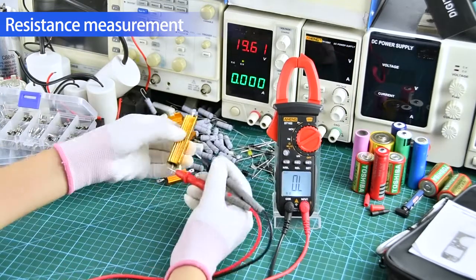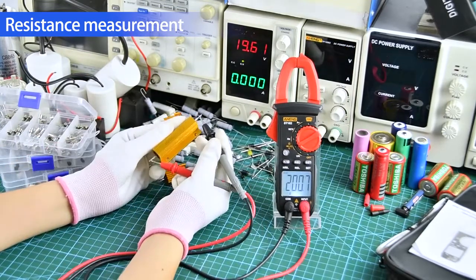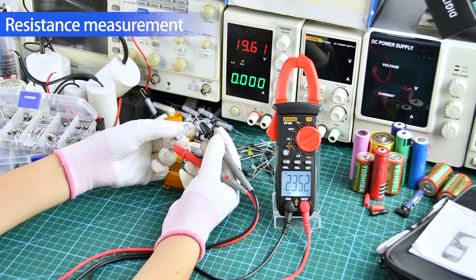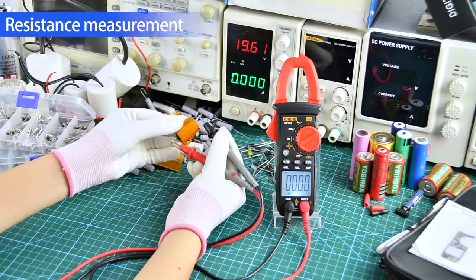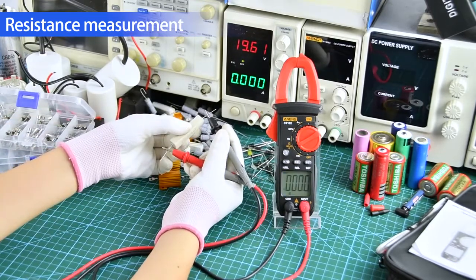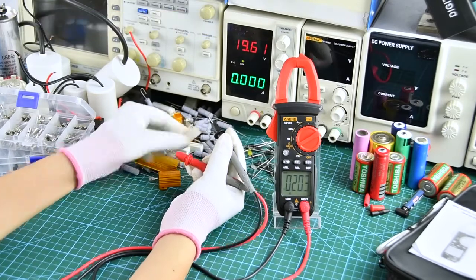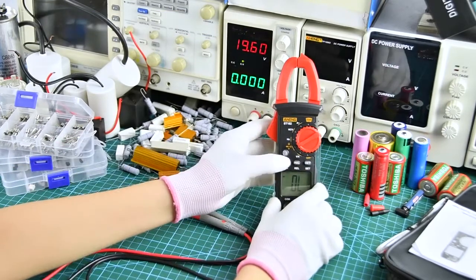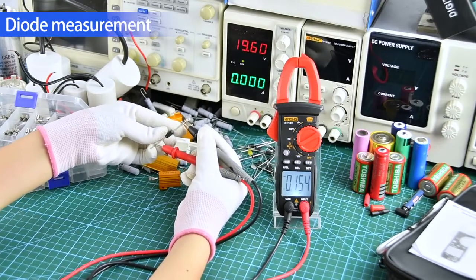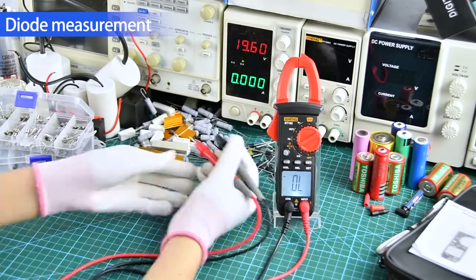Resistance measurement can be measured by connecting both sides. Diode measurement - the positive and negative poles need to be aligned.